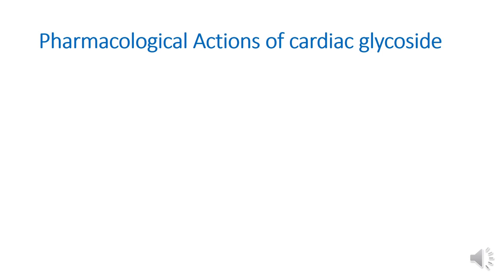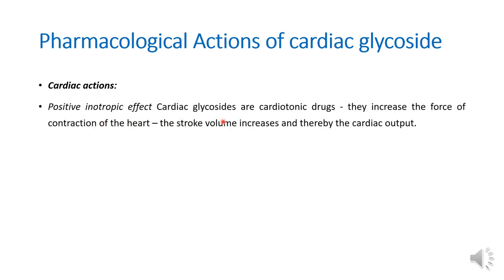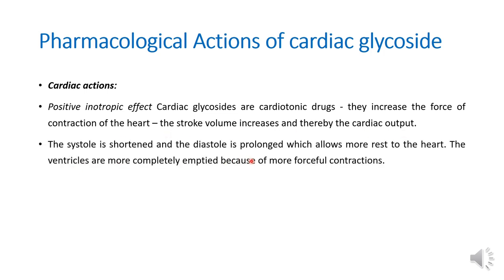Now we will see the pharmacological actions of cardiac glycoside. First, the cardiac action — positive inotropic effect. Cardiac glycosides are cardiotonic drugs; they increase the force of contraction of the heart. Stroke volume increases and thereby cardiac output also increases. The systole is shortened and diastole is prolonged, allowing more rest to the heart. The ventricles are more completely emptied because of more forceful contraction, which helps in congestive heart failure where there is accumulation of blood.